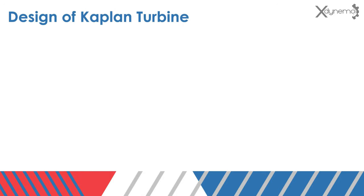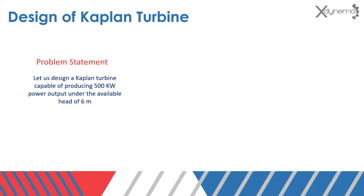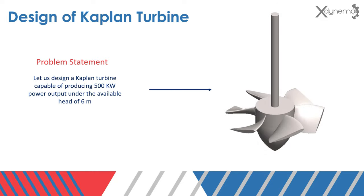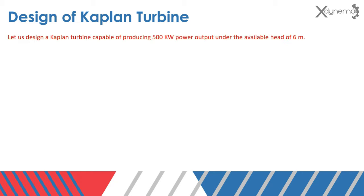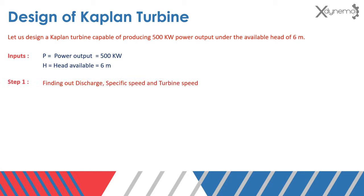Now we will discuss the design procedure of the Kaplan turbine. Here is the problem statement: let us design a Kaplan turbine capable of producing 500 kW power output under the available head of 6 meters. Only the power output required and available head are provided in the problem statement. Step 1: finding out discharge, specific speed, and turbine speed. Assume the overall efficiency of turbine is 85%. Power output P equals overall efficiency times rho*G*Q*H. From this equation, the discharge Q can be calculated. Here is the equation to calculate the specific speed of the turbine using H. Turbine speed N can be calculated from the value of specific speed using this equation.